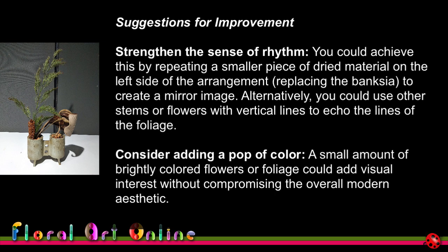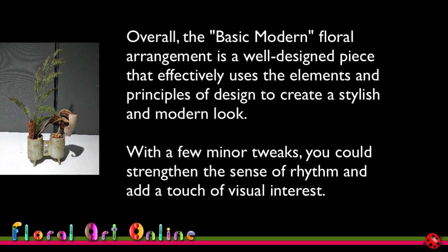The Design Eye suggestions for improvement: strengthen the sense of rhythm — you could achieve this by repeating a smaller piece of dried material on the left side of the arrangement to create a mirror image, or use other stems with vertical lines to work out the lines of the foliage. Also consider adding a pop of colour — a small amount of brightly coloured flowers or foliage could add visual interest without compromising the modern aesthetic. I think my big problem is that it is the wrong container — the two openings are creating a problem for getting the rhythm and clean lines that a Basic Modern arrangement should have.